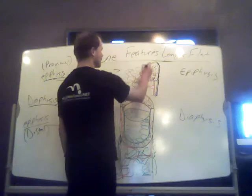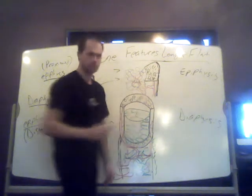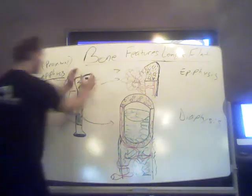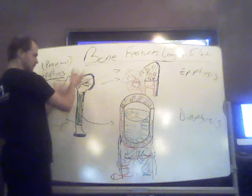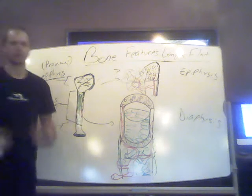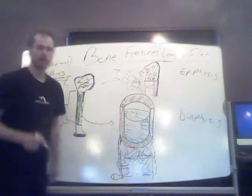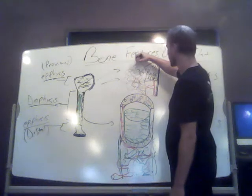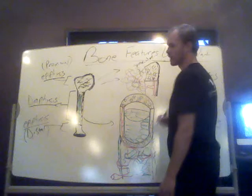On the outside you have compact bone, and then all within the inner workings of this bulky end — whether it's a head, a trochanter, or a tubercle — there's spongy bone throughout, these porous networks. The spaces created here are called trabeculae.